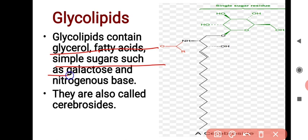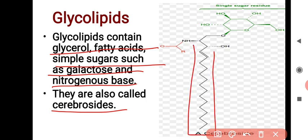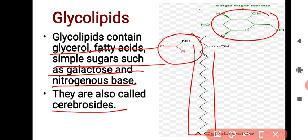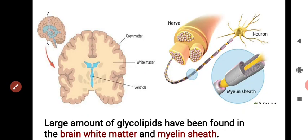Glycolipids contain glycerol, fatty acids, a simple sugar such as galactose, and nitrogenous bases. These are also called cerebrosides. A cerebroside has a fatty acid chain, a single sugar residue attached, and a nitrogenous base attached. So cerebrosides are a type of glycolipid.